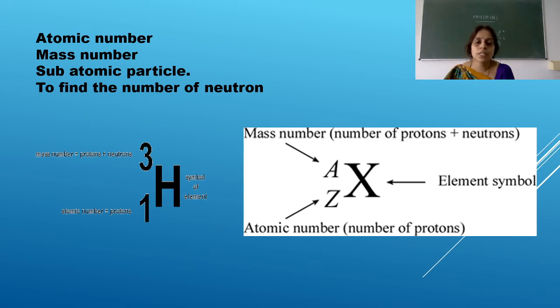But there will be a reaction where an atom can lose an electron also to become an ion. So atomic number is nothing but it is only the number of protons. What do you mean by mass number? Mass number, it is a sum of protons and neutrons in an atom. What is subatomic particle? We do have protons, electrons and neutron.